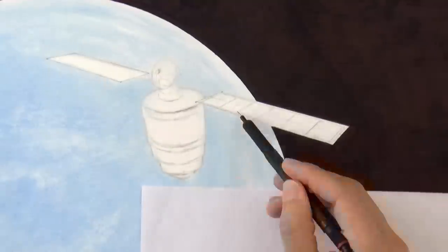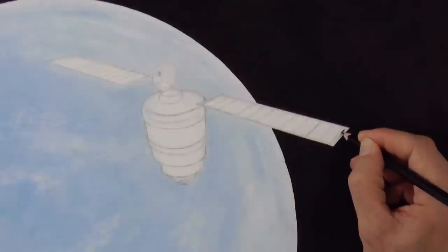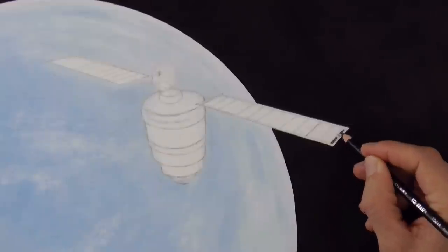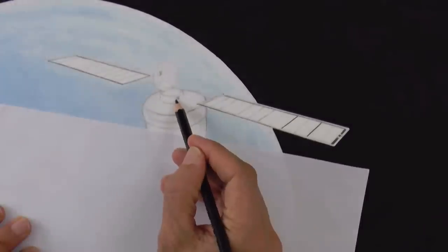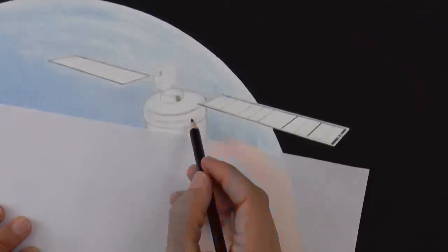We finish sketching the detail and then with a black pencil well sharpened, we begin the solar panels. And then we render the shadows and the lights on the satellite.